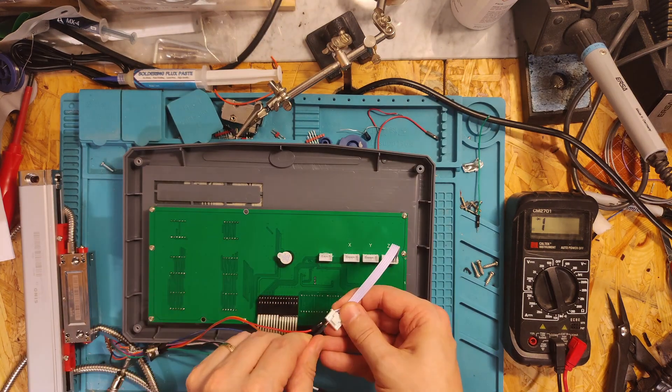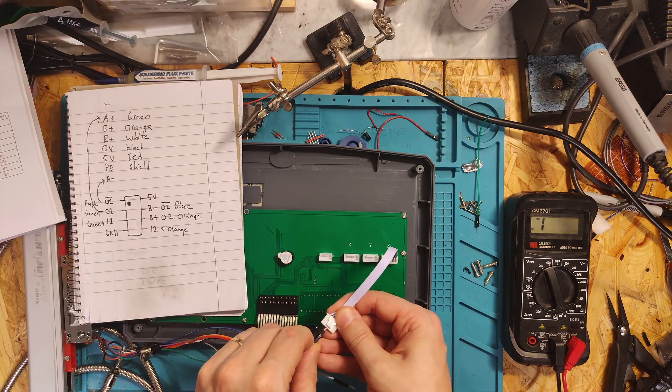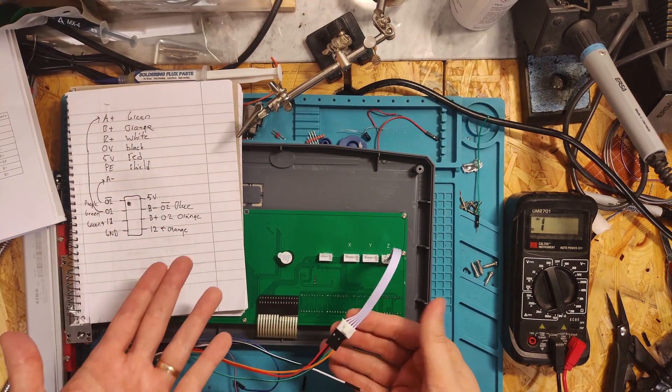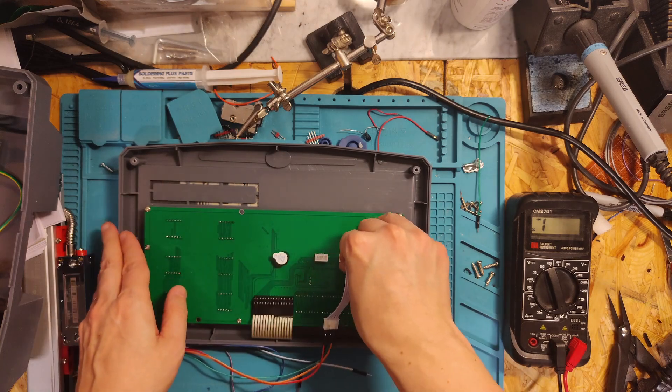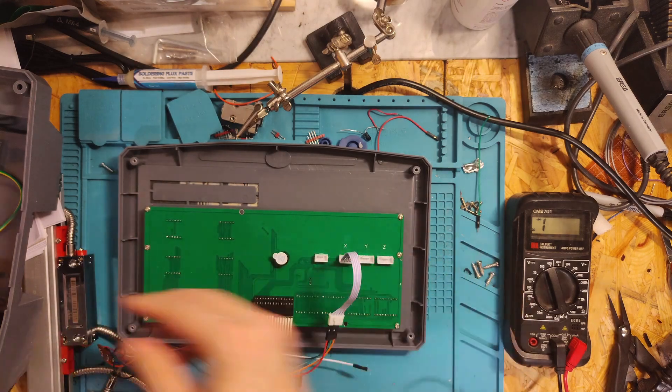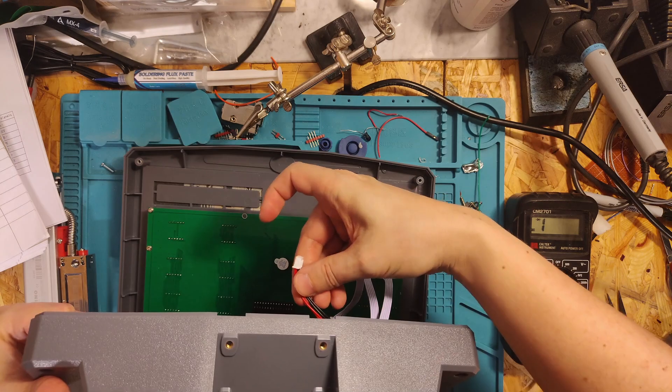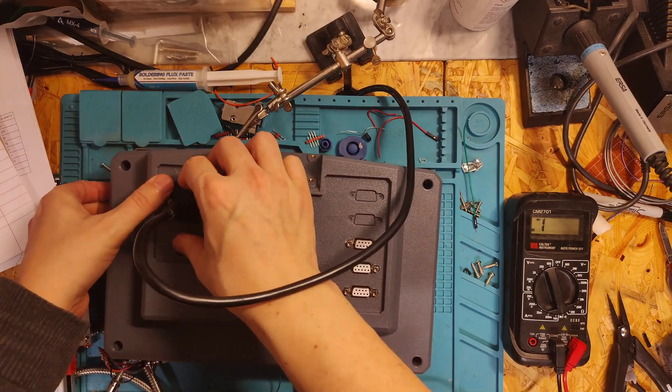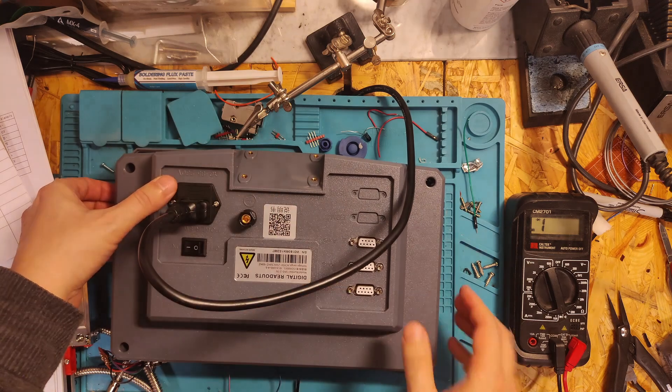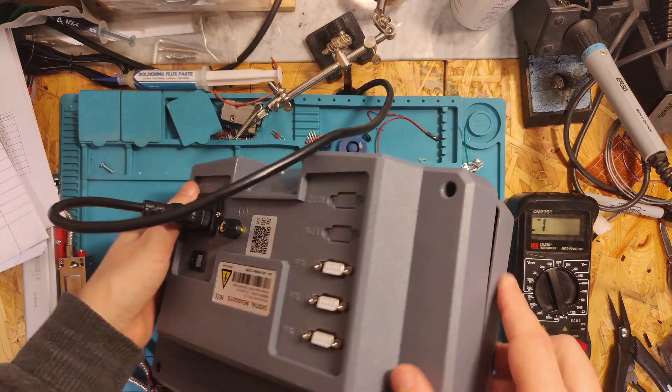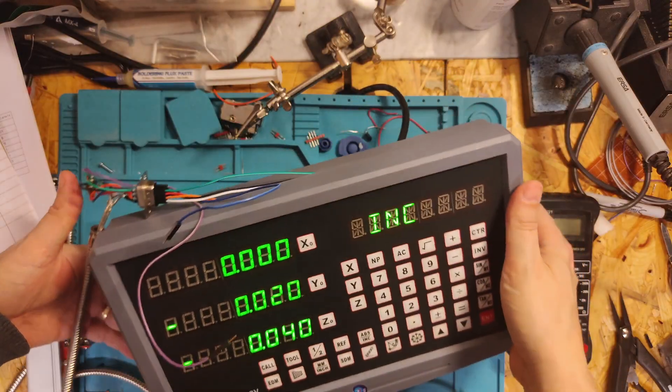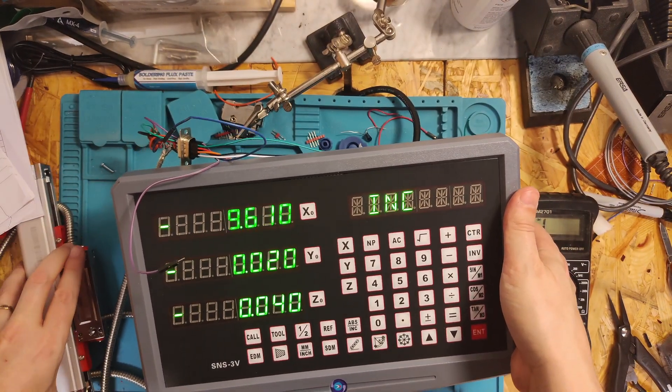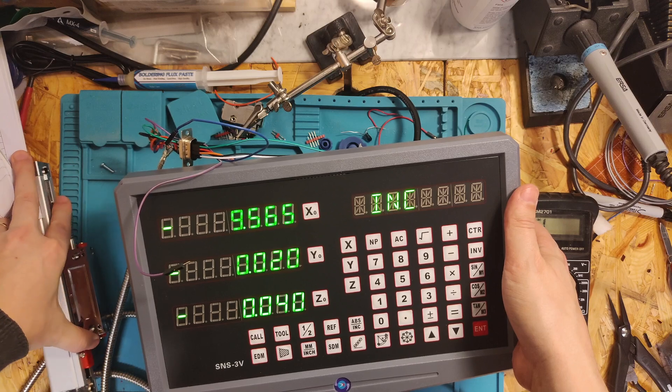It turns out that the correct order is 5 volts, ground, A+, B+, and then R+, but I don't think that's relevant for us. And there it is, it works.